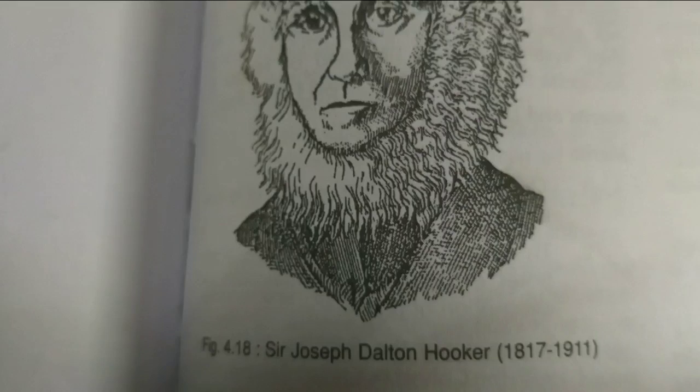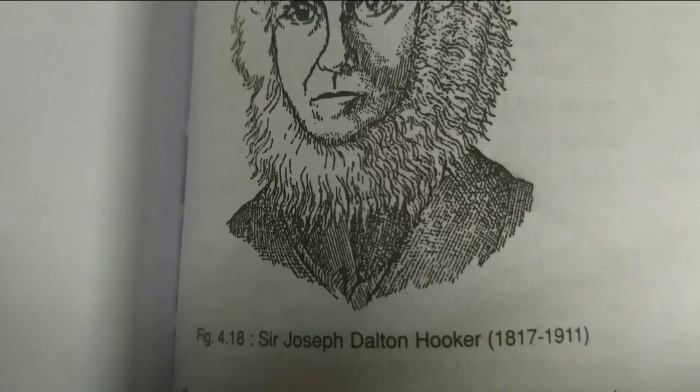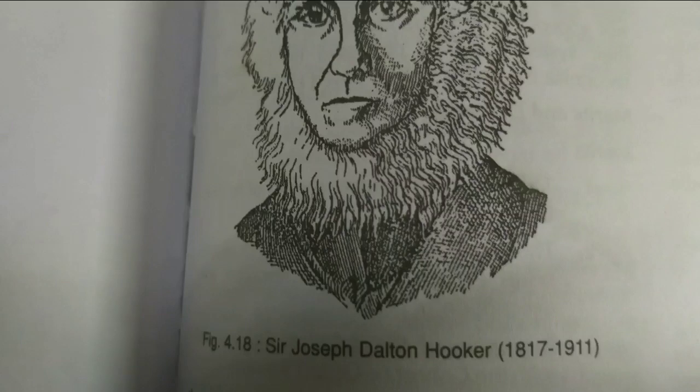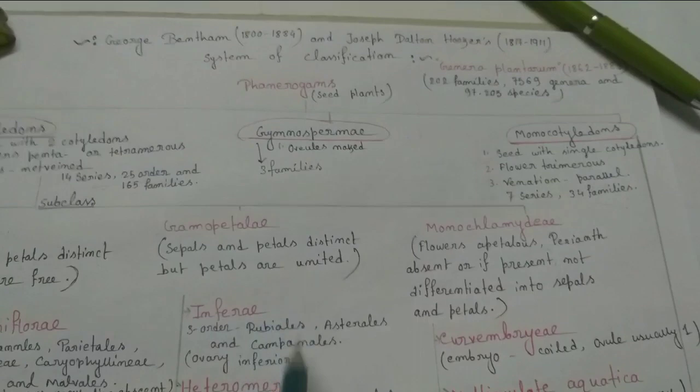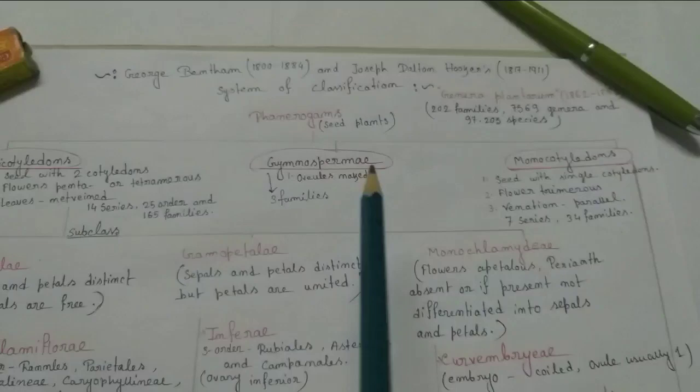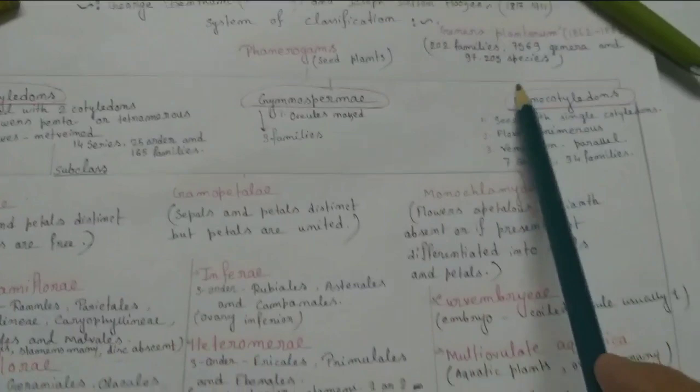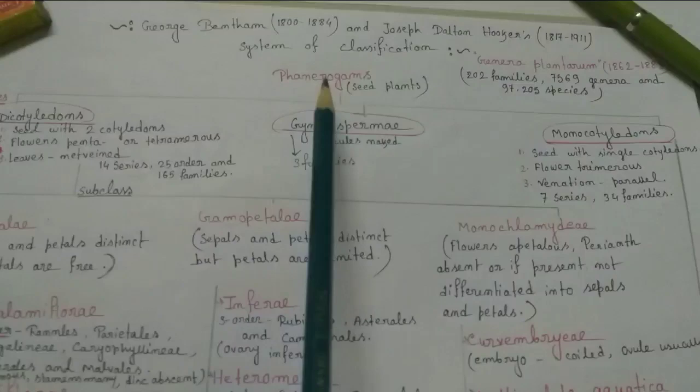97,205 species belonging to 7,569 genera of 202 families of plants. Bentham and Hooker system of classification is clearly derived from the system of De Candolle and De Jussieu. So today we talk about the classification of Bentham and Hooker. It is the summary of this classification which they described in their three volume work Genera Plantarum and they describe 202 families in each.